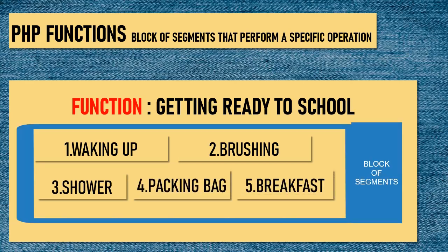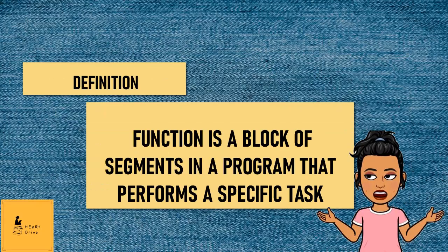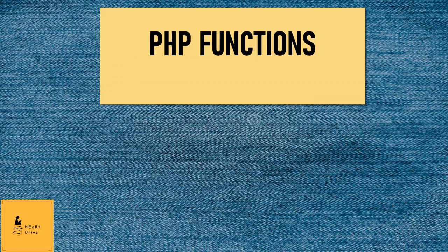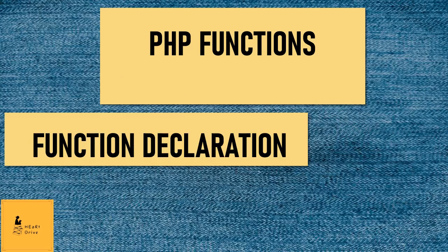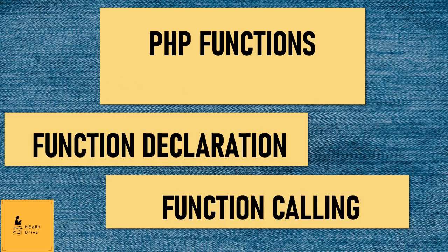So, a function has a specific operation but it includes multiple actions in it to accomplish the task. Definition: a function is a block of segments in a program that performs a specific task. When you study about functions, you should know these two terms: function declaration and function calling.